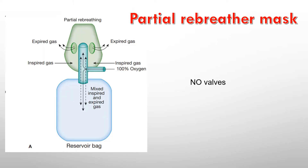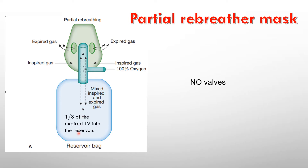Partial re-breathing mask: it's a mask with an attached reservoir and there is no valve in between them. A continuous oxygen inflow of more than 8 up to 15 liters is required for this bag to be inflated. Once inflated, the patient is allowed to inspire, and during the phase of expiration, the initial one-third of expired air returns to this reservoir, which corresponds to the anatomical dead space.